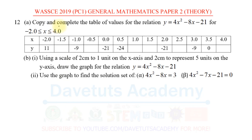Here in this question, we are told to copy and complete the table of values for the relation y = 4x² - 8x - 21 for values of x ranging from -2.0 to 4.0. That is the meaning of this inequality expression: -2.0 ≤ x ≤ 4.0. These are the entries we need to work with, and some values of y have already been computed.